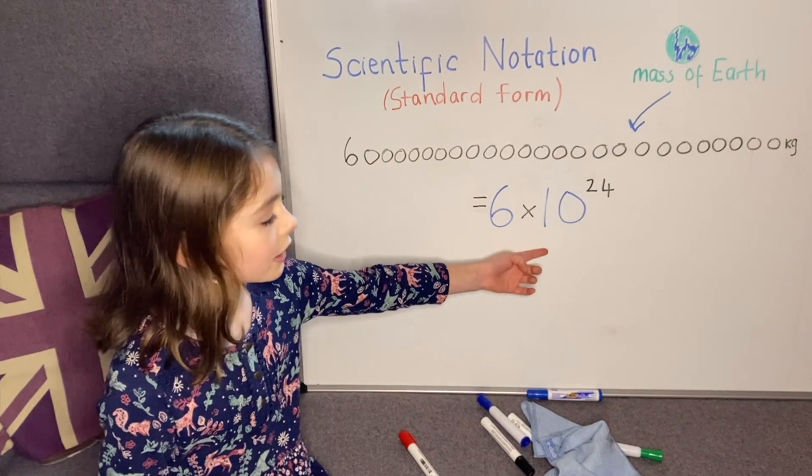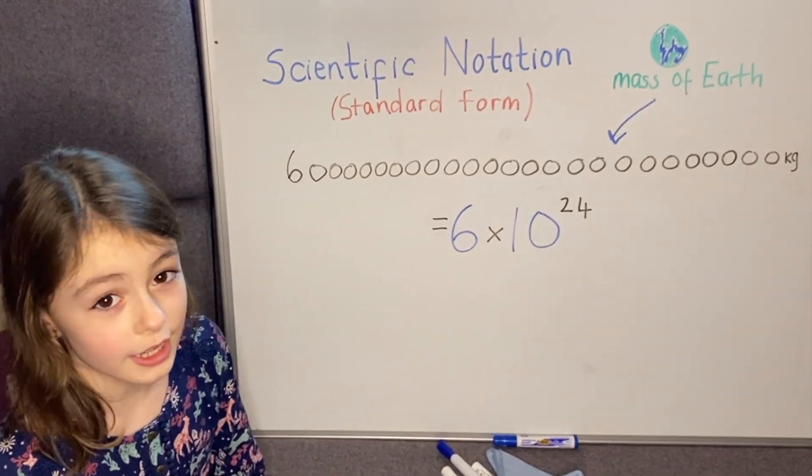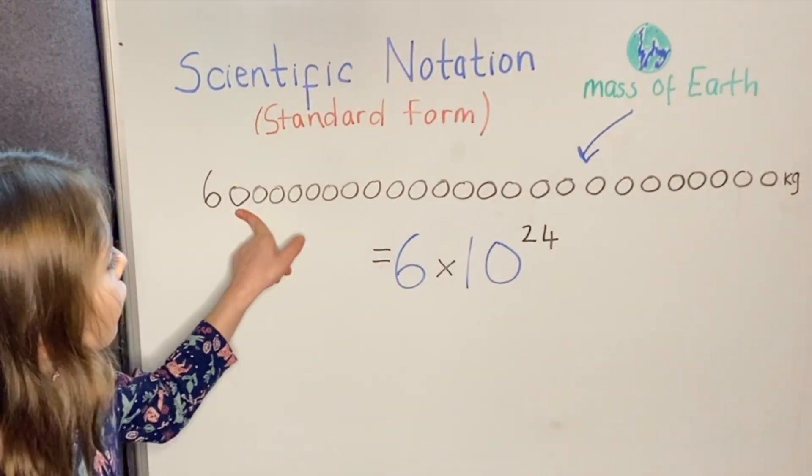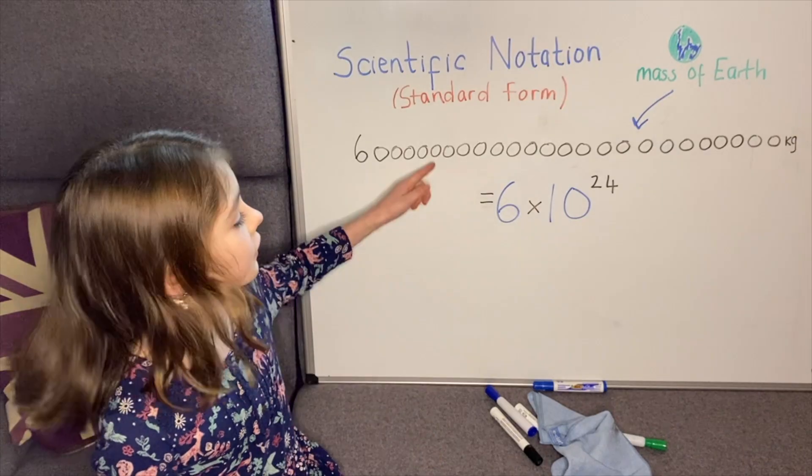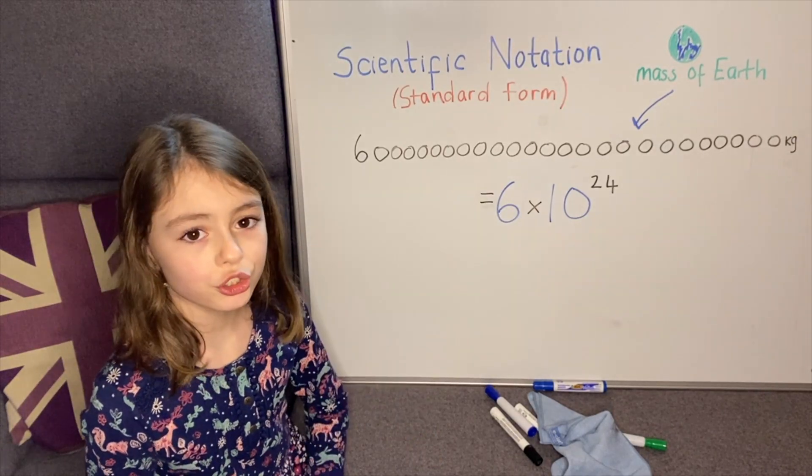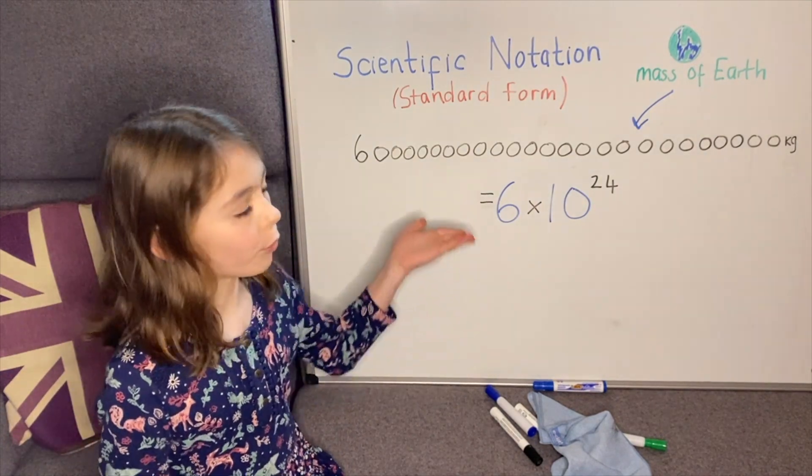But if we put this in standard form, I can straight away tell you that this big number has 24 zeros. These are the same number, but one's just written in standard form and one isn't.